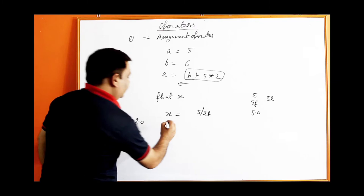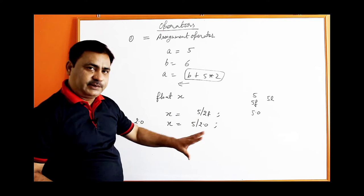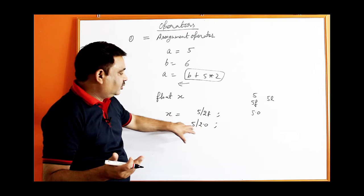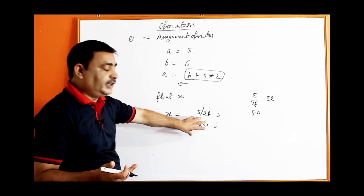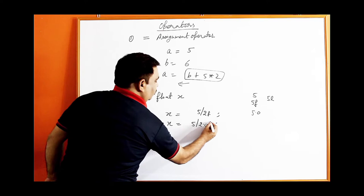If you write x equal to 5 divided by 2.0, it will give an error. Because 2.0 is a double type by default, integer divided by double gives double — and double cannot be assigned to a float variable, giving a 'possible loss of precision' error. A bigger value cannot be assigned to a smaller type variable. So either use 2f or 2.0f.